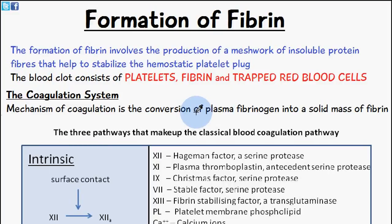Welcome to 5-Minute School. Today's video we're going to be talking about the formation of fibrin and the coagulation system, which involves three main pathways: the intrinsic, extrinsic, and common pathway. So let's begin this video.